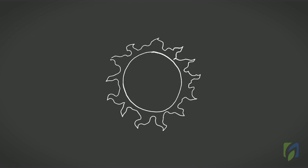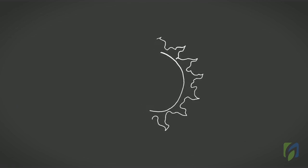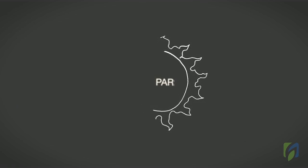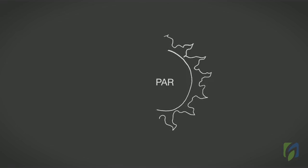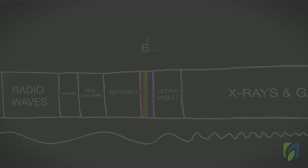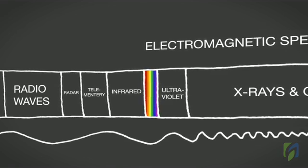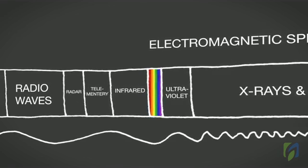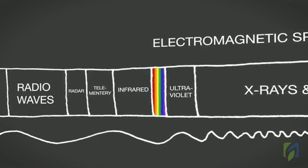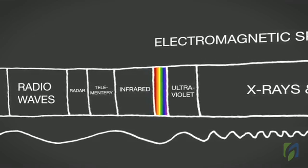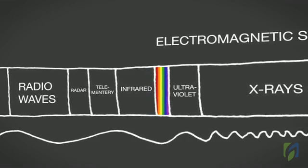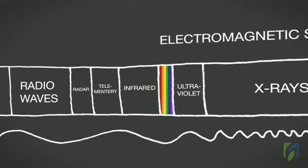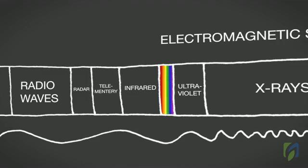Less than half of the electromagnetic radiation from the sun is photosynthetically active radiation. The remaining amount of electromagnetic radiation consists of shorter wavelengths below 400 nanometers, including ultraviolet light, or longer wavelengths including far red light at approximately 700 to 800 nanometers, and infrared radiation.